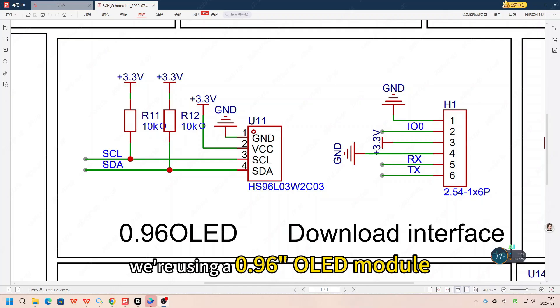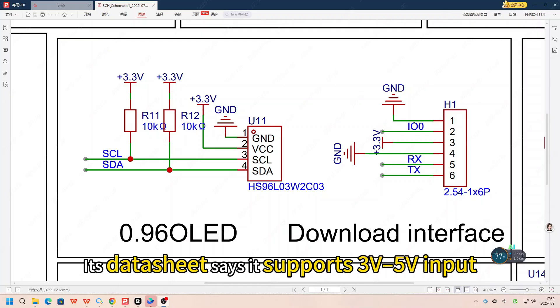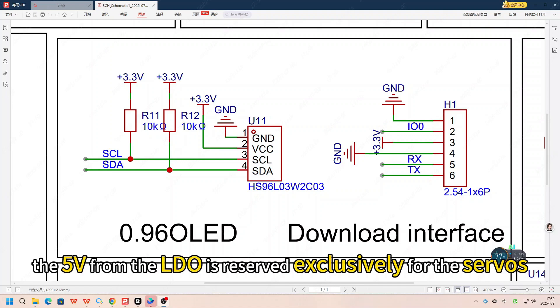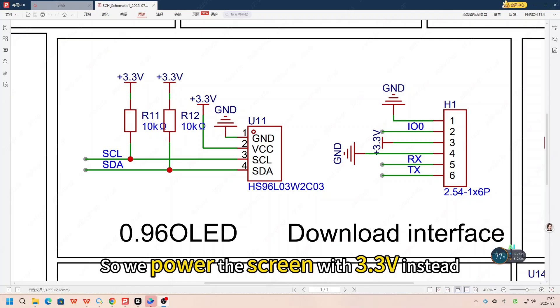About the screen, we are using a 0.96 OLED module. Its datasheet says it supports 3V to 5V input. But in our design, the 5V from the LDO is reserved exclusively for the servos. So we power the screen with 3.3V instead.